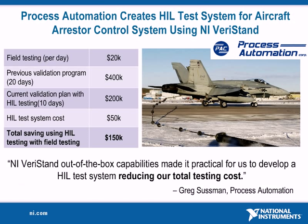In order to test these systems, they use a test facility where they can accelerate a mass down a runway to replicate the effect of a plane landing. It costs twenty thousand dollars per day to use this test facility, and the last time these control systems were updated it required twenty days of field testing. To reduce the number of real system-level tests necessary to validate the new controllers, process automation implemented a HIL test system, which allowed them to begin identifying issues before they ever went to the airfield.